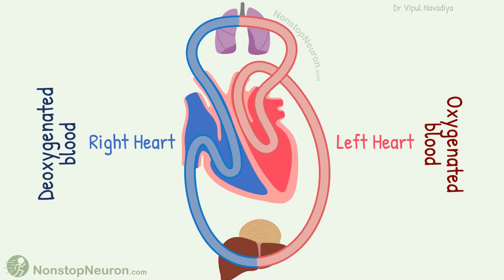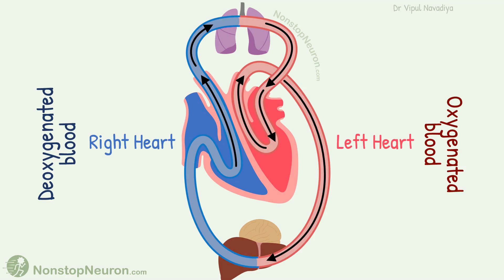Now we can fit in the realistic heart. Here we have the right ventricle, pulmonary artery, pulmonary vein, left atrium, left ventricle, aorta, vena cava, and right atrium. The anatomy of all these structures has complicated the understanding of blood circulation.